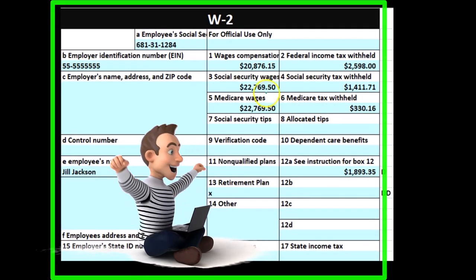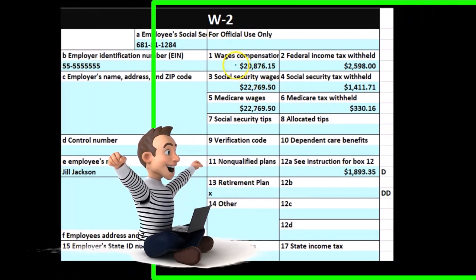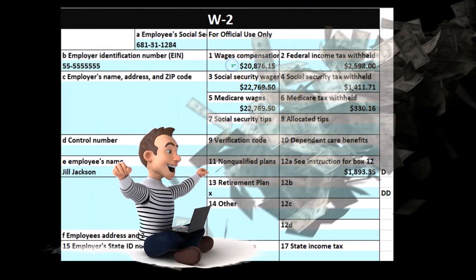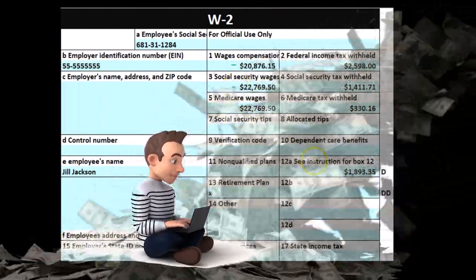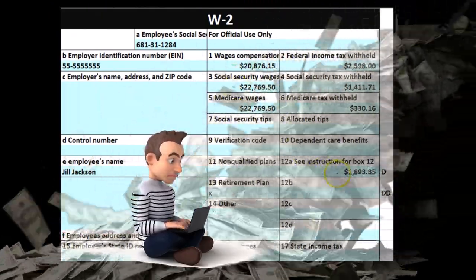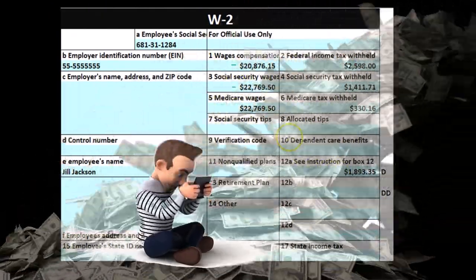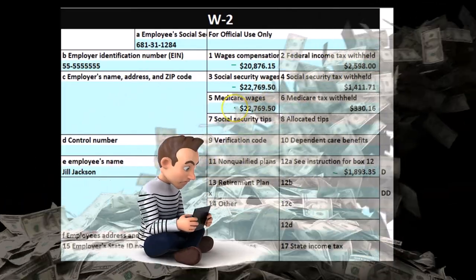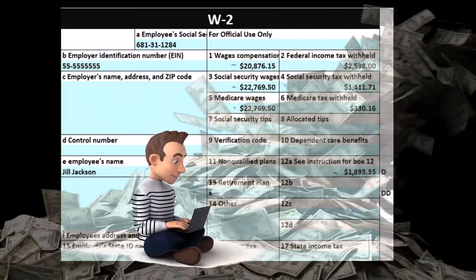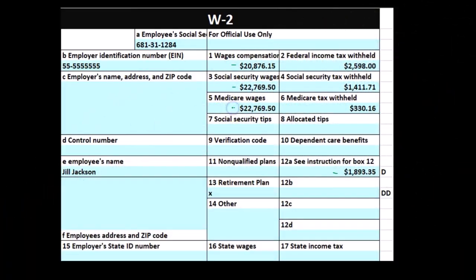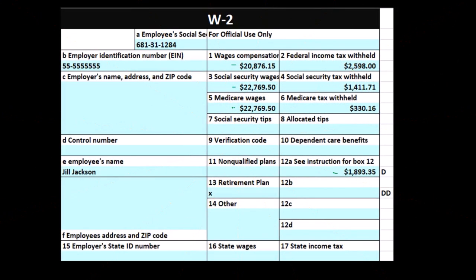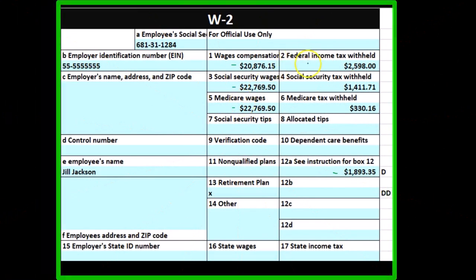Social security is 6.2% of Box 3, and Medicare is 1.45% of Box 5 respectively. The same applies for our third employee: Box 1 differs from Box 3 due to the retirement plan in Box 12, and Box 3 equals Box 5 because this employee didn't reach the cap. The same calculations apply for Boxes 2, 4, and 6.